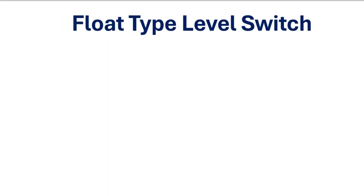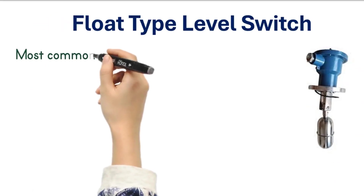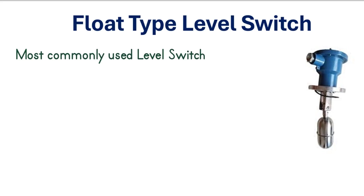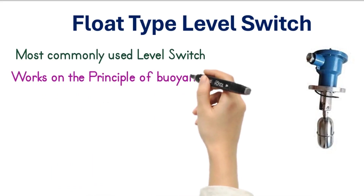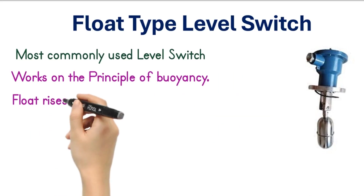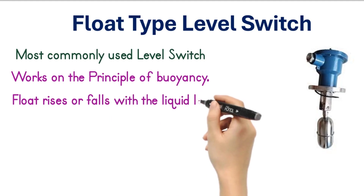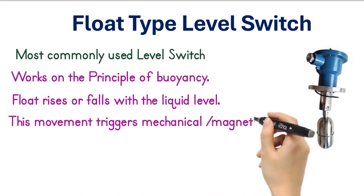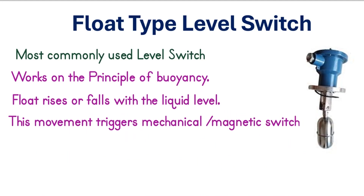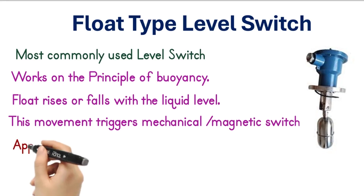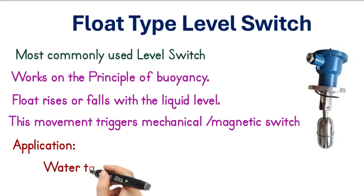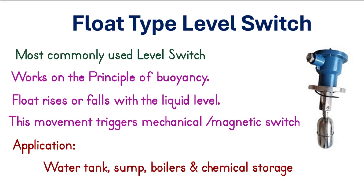Float type level switch. The float type level switch is the most commonly used level switch. This level switch works on the buoyancy principle. The float rises or falls with the liquid level. This movement triggers a mechanical or magnetic switch to indicate high or low levels. You'll often find it in water tanks, sumps, boilers, and chemical storage tanks.